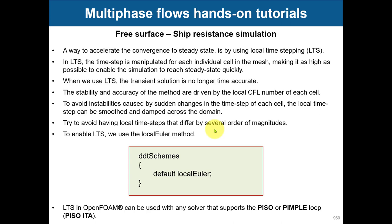Local time stepping is a hybrid between fully unsteady and steady state. It is more stable than steady state but less accurate than fully unsteady. Essentially it introduces an artificial time step: in the steady approach there is no time step, but with LTS each cell in your domain gets a different local time step.